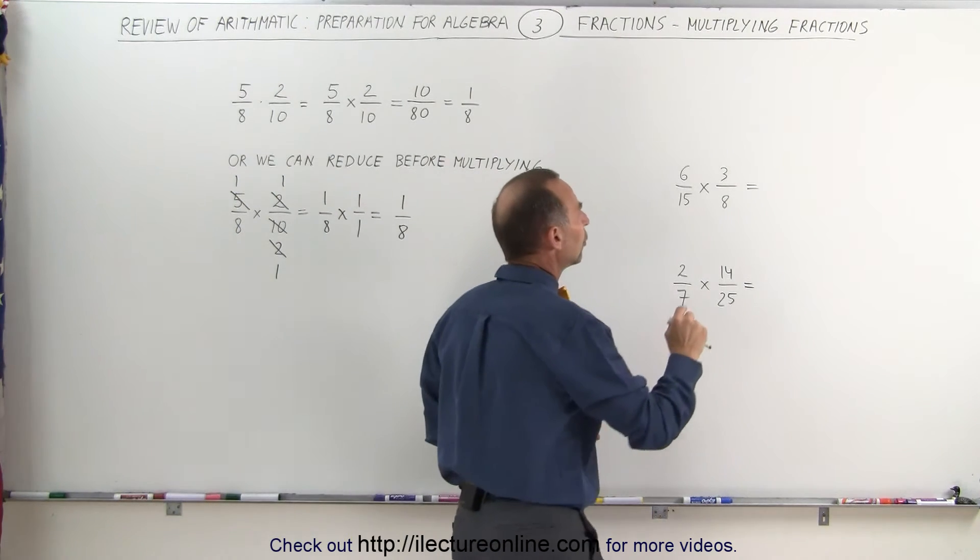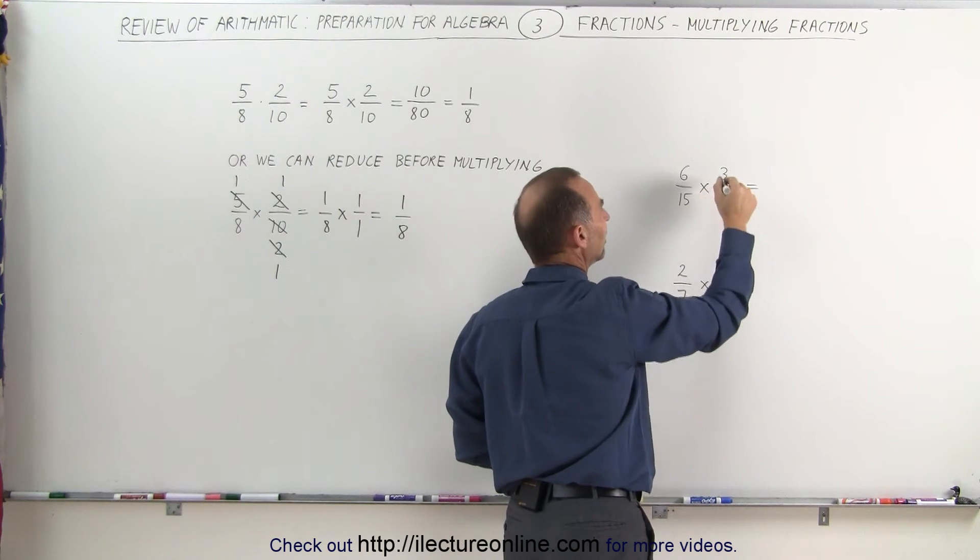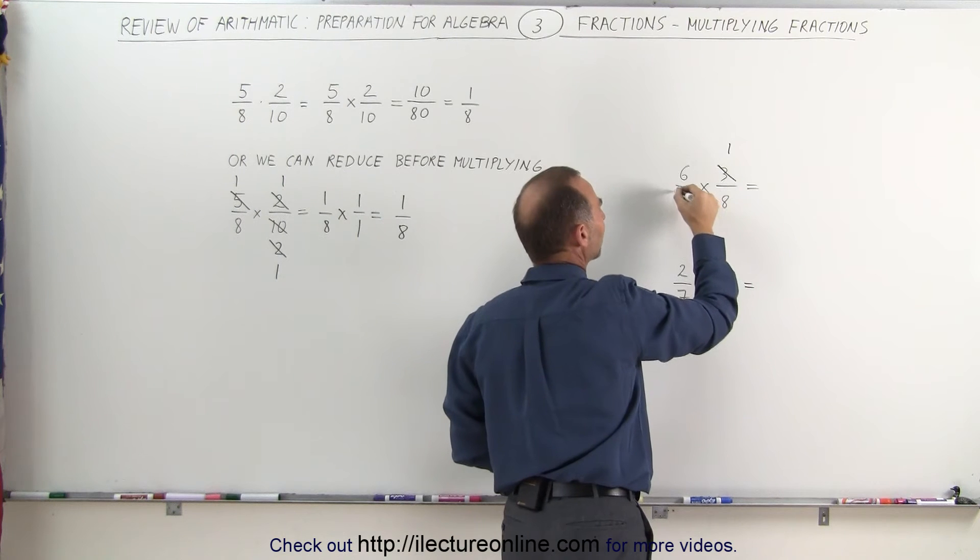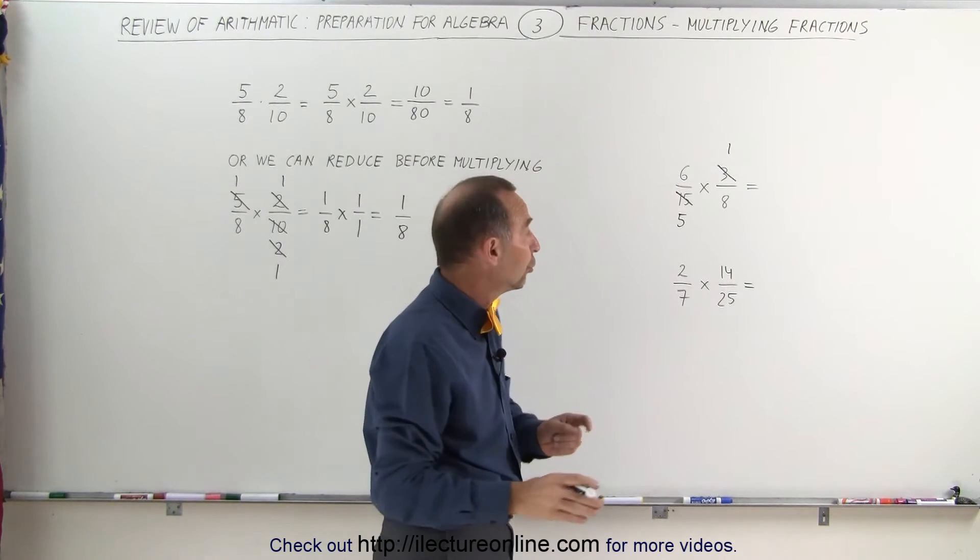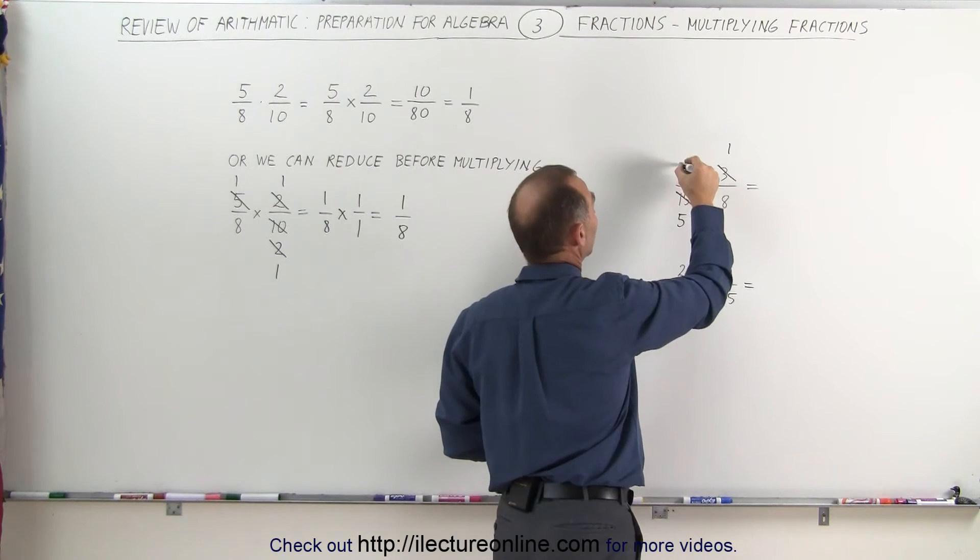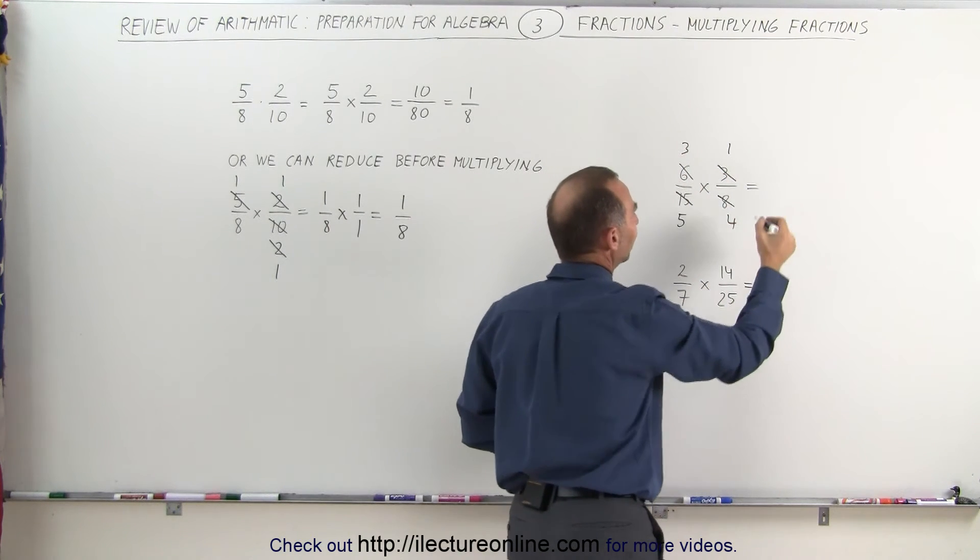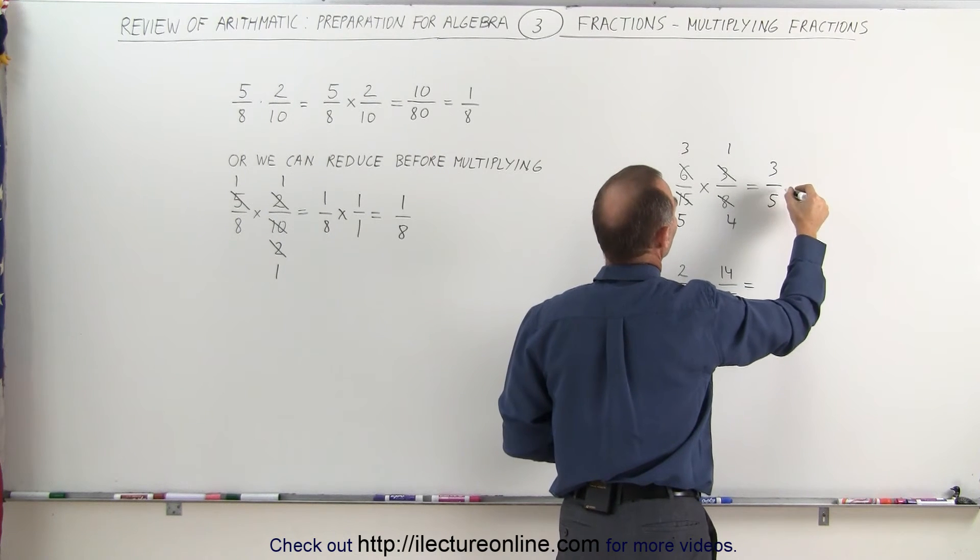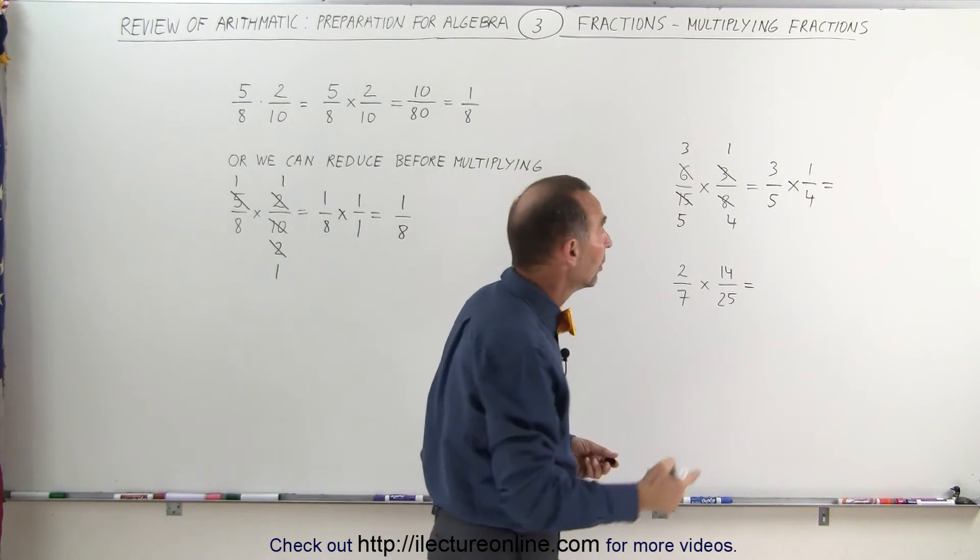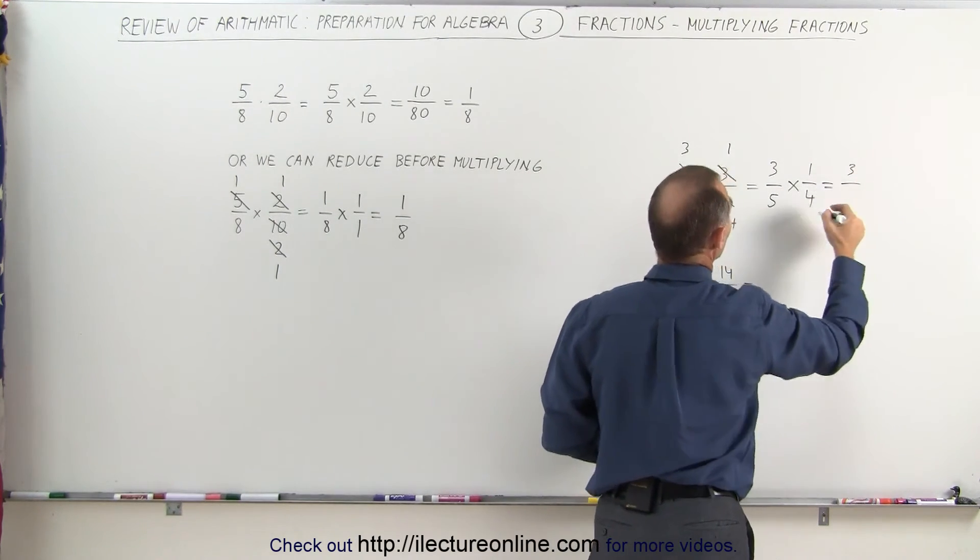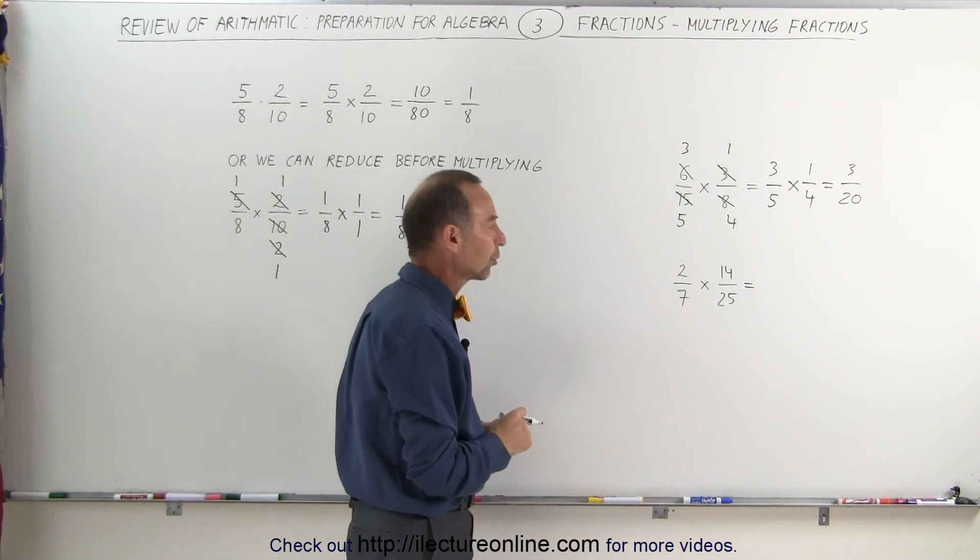Looking over here, notice that the 3 and the 15 are both reducible because we can divide this by 3. 3 divided by 3 is 1. 15 divided by 3 is equal to 5. Also we can reduce the 6 and the 8. Both are divisible by 2 because they're both even. 6 divided by 2 is equal to 3. 8 divided by 2 is equal to 4. Now what we have left is we have 3 over 5 times 1 over 4. And now we can go ahead and multiply the numerators together. 1 times 3 is 3. And the denominators, 4 times 5 is 20. So the product of these two fractions is 3 divided by 20, or 3/20.